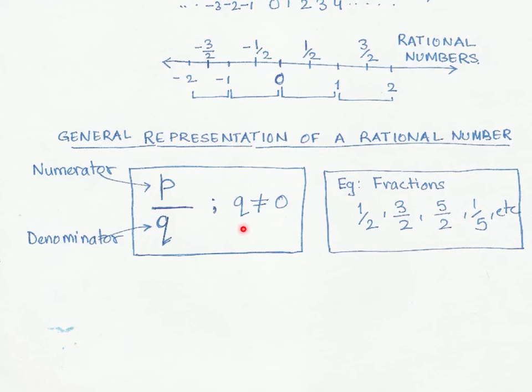As I mentioned earlier, fractions are rational numbers. All these numbers—1/2, 3/2, 5/2—proper and improper fractions, when represented in the form p/q where the denominator is not equal to 0 (q ≠ 0), are rational numbers. An important thing to remember is how we represent rational numbers.